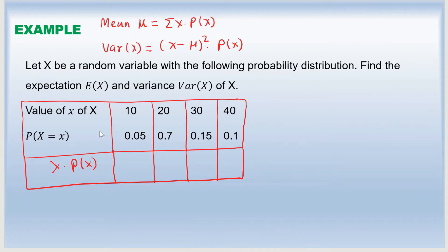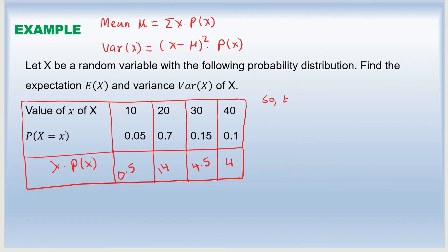Multiplying x times P(x): 10 × 0.05 = 0.5; 20 × 0.7 = 14; 30 × 0.15 = 4.5; and 40 × 0.1 = 4. The expectation E(x), or mean, is the sum of x times P(x): 0.5 + 14 + 4.5 + 4 = 23. So the expected value is 23.